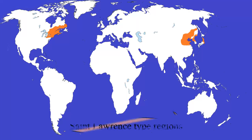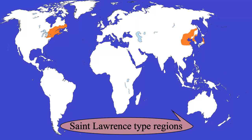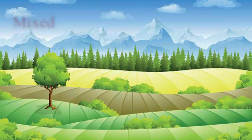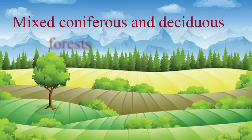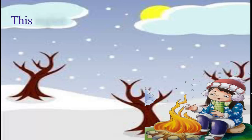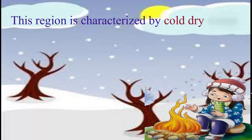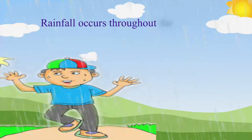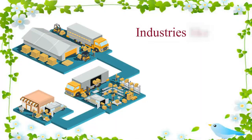Let us look at the map to know the St. Lawrence-type regions. As you can see, the St. Lawrence-type region is found only in the northern hemisphere. This region includes the North-eastern side of the United States of America, the eastern area of Canada, the northern side of China, Korea, and Japan. Mixed coniferous and deciduous forests are found here. This region is characterized by cold, dry winters and warm, wet summers. Rainfall occurs throughout the year, and industries like wood, pulp, and paper are developed on a large scale.